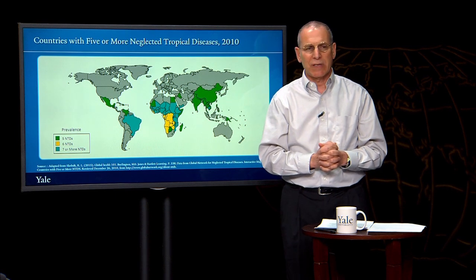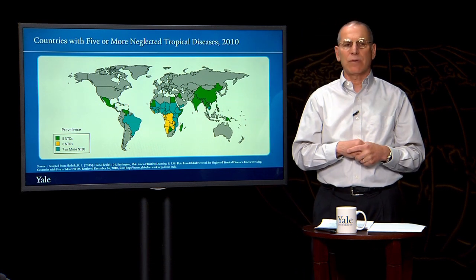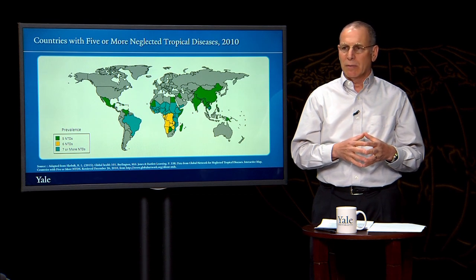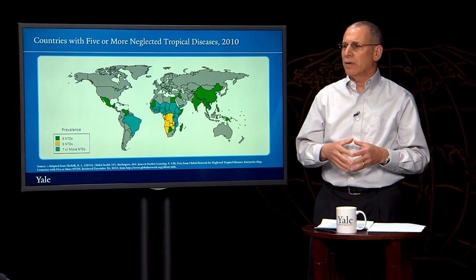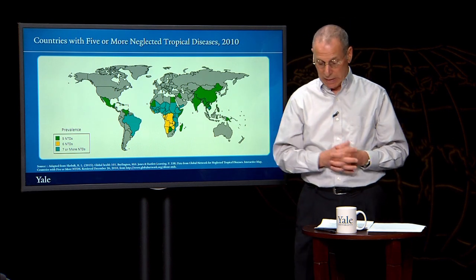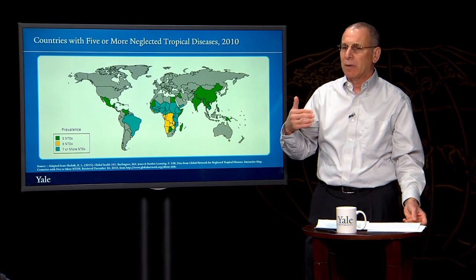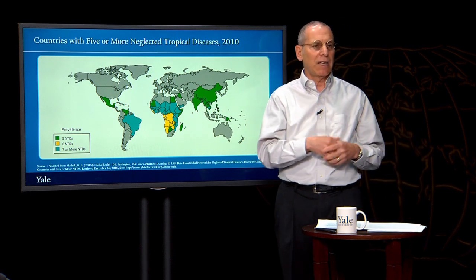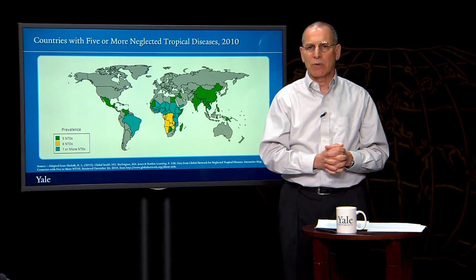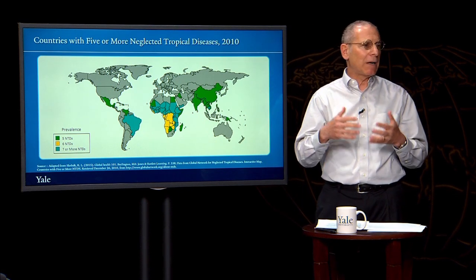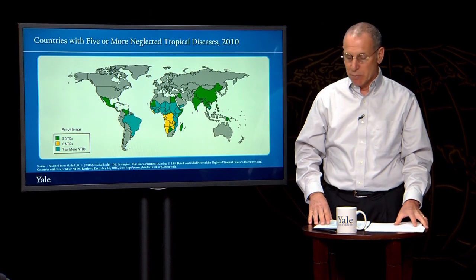Another important reason is that these diseases aren't very often associated with deaths. However, they can cause an enormous amount of illness and disability. Some have suggested that if we added up the disability-adjusted life years caused by the most prevalent of the neglected tropical diseases, we'd end up with as many DALYs as are caused annually by malaria.